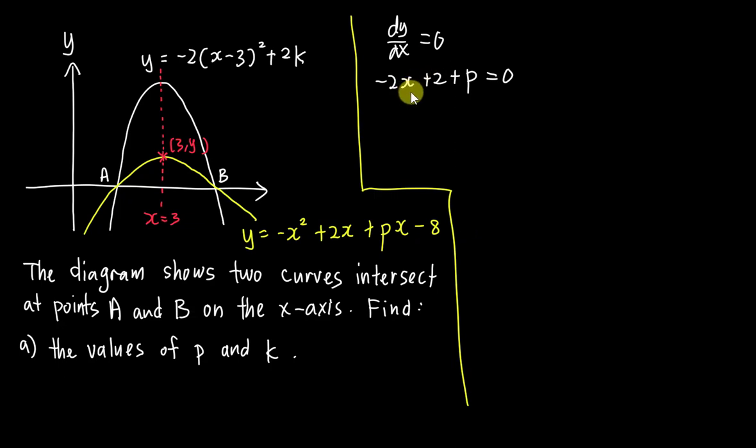All right, then I know my x value, isn't it? My x value is 3 at this turning point. Because dy/dx equals 0, this is for turning point, isn't it? So I will just sub my x equals 3 into negative 2 times 3 here, which is negative 6 plus 2 plus p. So I can get the p like this, which is negative 4 moved to the other side will be positive 4.